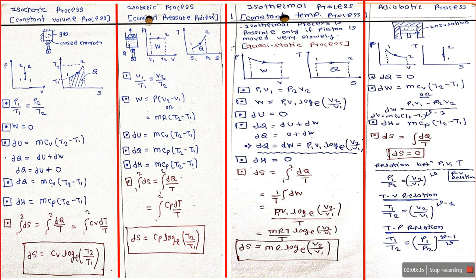Starting with the general gas equation: p1 v1 upon t1 is equal to p2 v2 upon t2. In the case of the isochoric process, volume is constant, so in the general gas equation, since v1 equals v2, the equation becomes p1 upon t1 is equal to p2 upon t2.